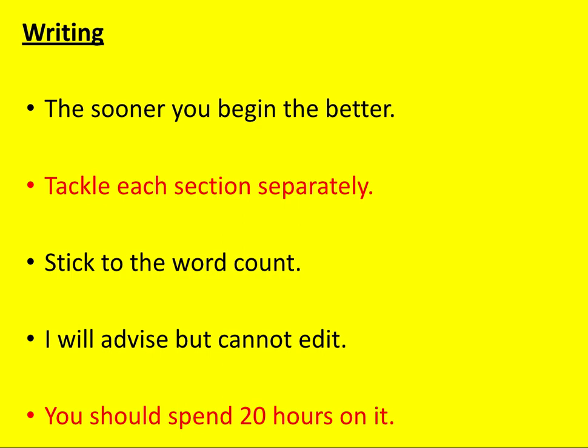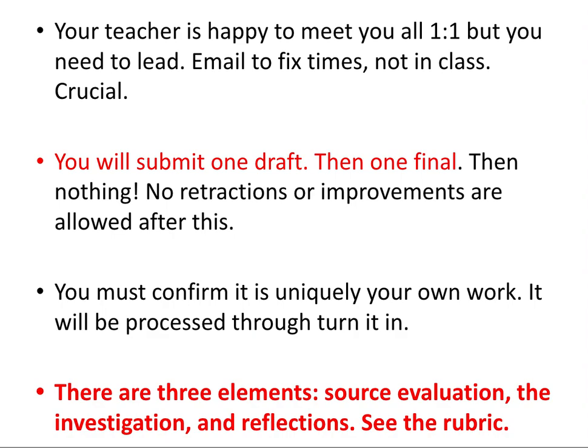The sooner you begin your write-up, the better. I recommend you tackle each section separately and stick to the suggested word counts. Your teacher will advise you but can't edit it. The IB suggests you spend about 20 hours on this project, although in reality you might spend a lot more. Your teacher will be happy to meet you one-to-one, but it's important you lead that process — email or chat to fix times. The IB says you can submit one draft and then one final IA and nothing more, so no retractions or improvements will be allowed after the agreed date. You must confirm it is uniquely your own work and it will be processed through Turnitin. There are three elements to the IA: source evaluation, the investigation itself, and your reflections.